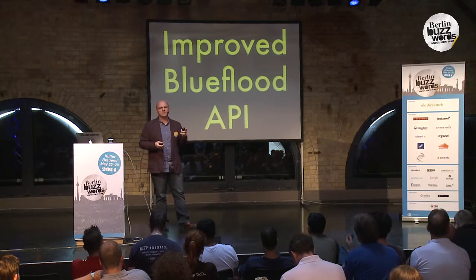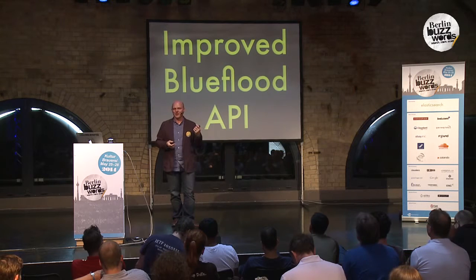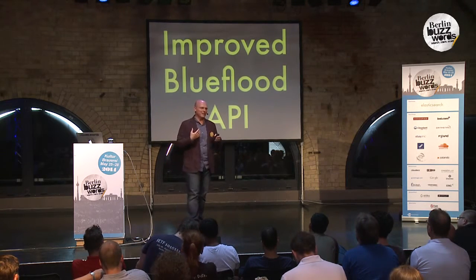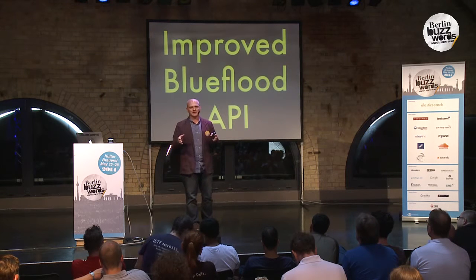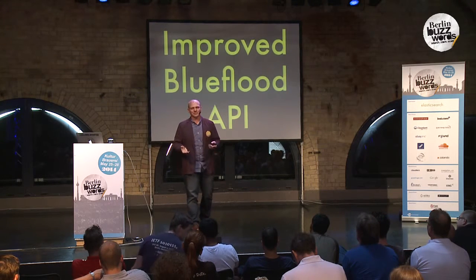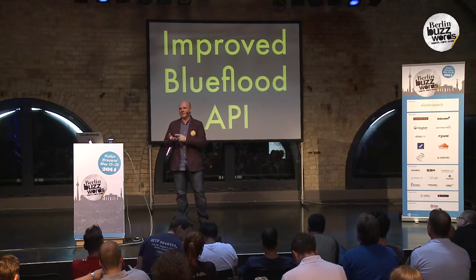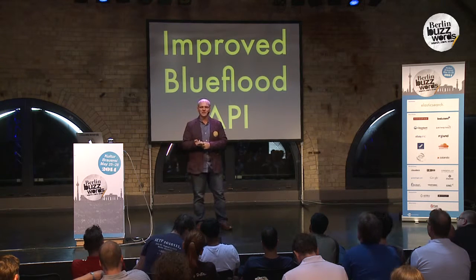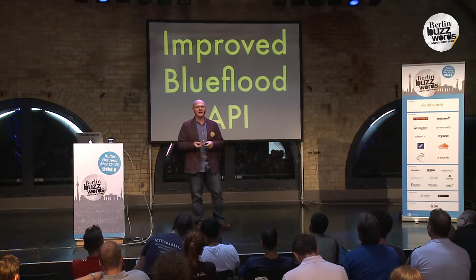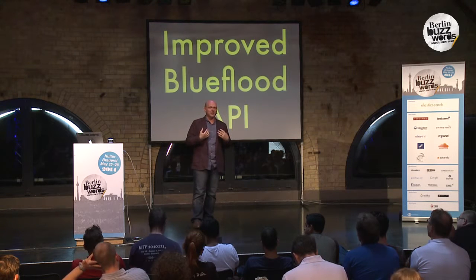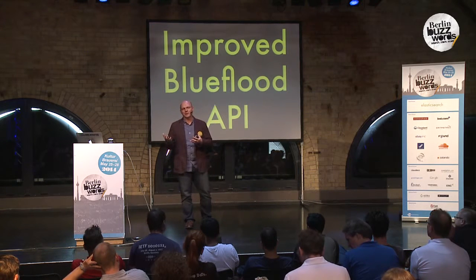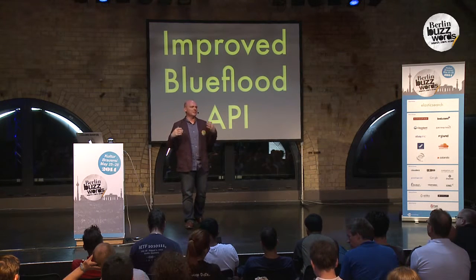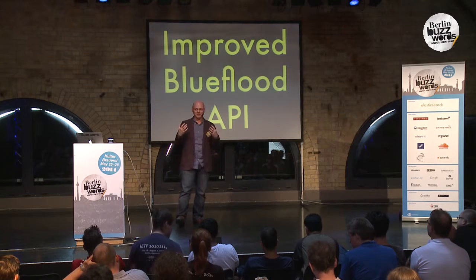When we first released Blue Flood we did it without any API. We used Thrift internally to access the data and we didn't want to share that interface publicly because it contained some internals from our cloud monitoring infrastructure that would have looked confusing to outsiders. We rationalized that if we just made it easy for other people to implement APIs on top of Blue Flood that they would do it — but this turned out to be a bad assumption and a lesson we learned.